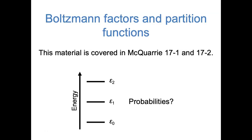Hi everybody. Up to this point, all of our videos have focused on quantum mechanics. We've looked at the quantized sets of energy levels for electrons, atoms, or molecules, but so far we really haven't talked at all about temperature. For the next several videos, we're going to look at statistical mechanics — that's where we think about the probabilities that each of the quantized energy levels will be occupied. Statistical mechanics is sort of the link between quantum mechanics and the macroscopic laws of thermodynamics, which you've probably seen before and which we'll cover later in the course.